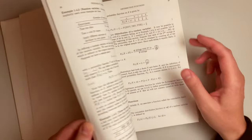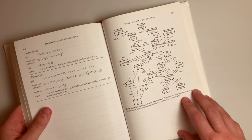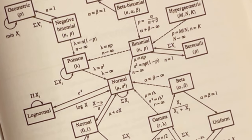There are a number of interesting tables, like the table in the back of the book which shows how many of the popular probability distributions are related.